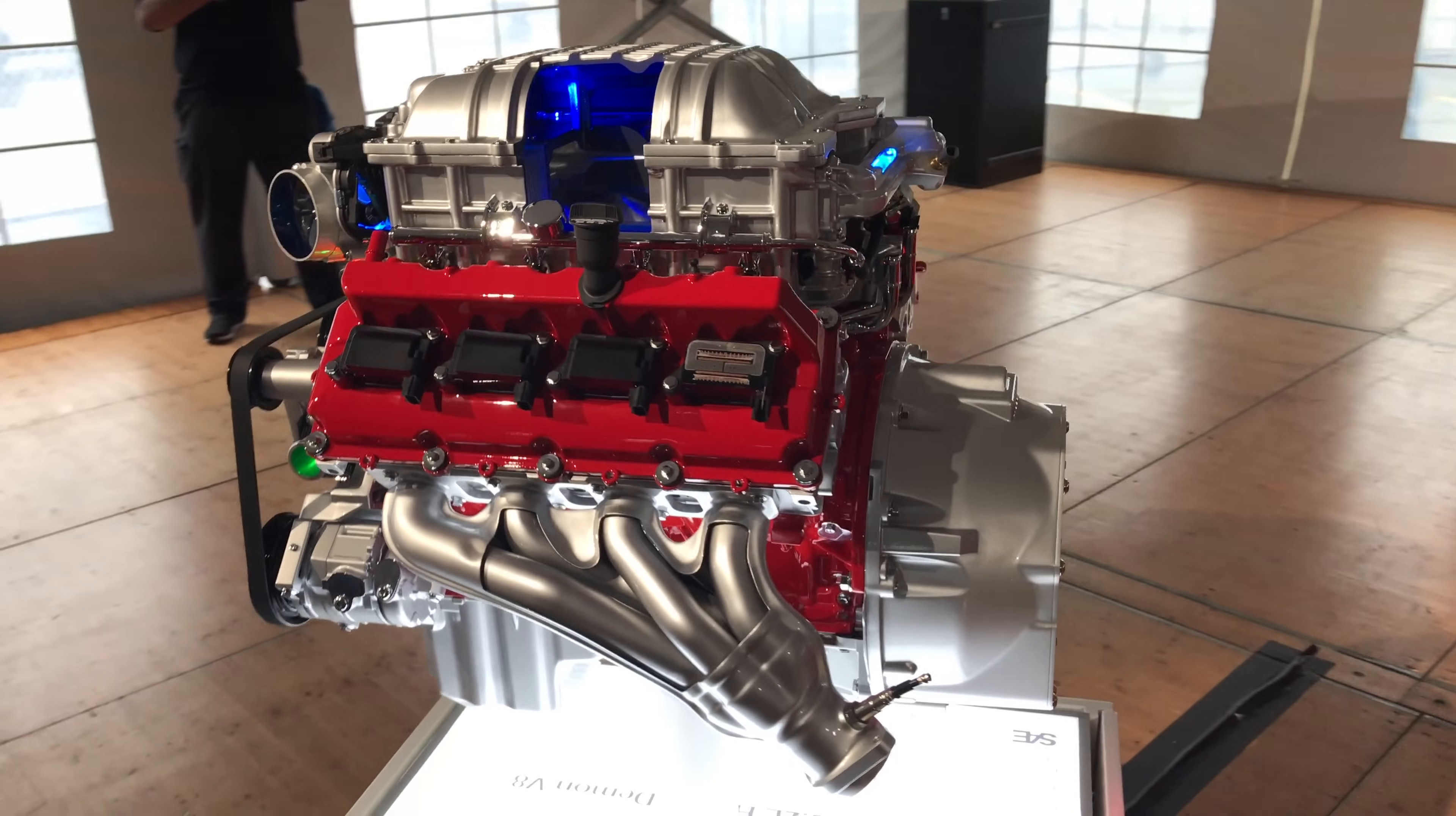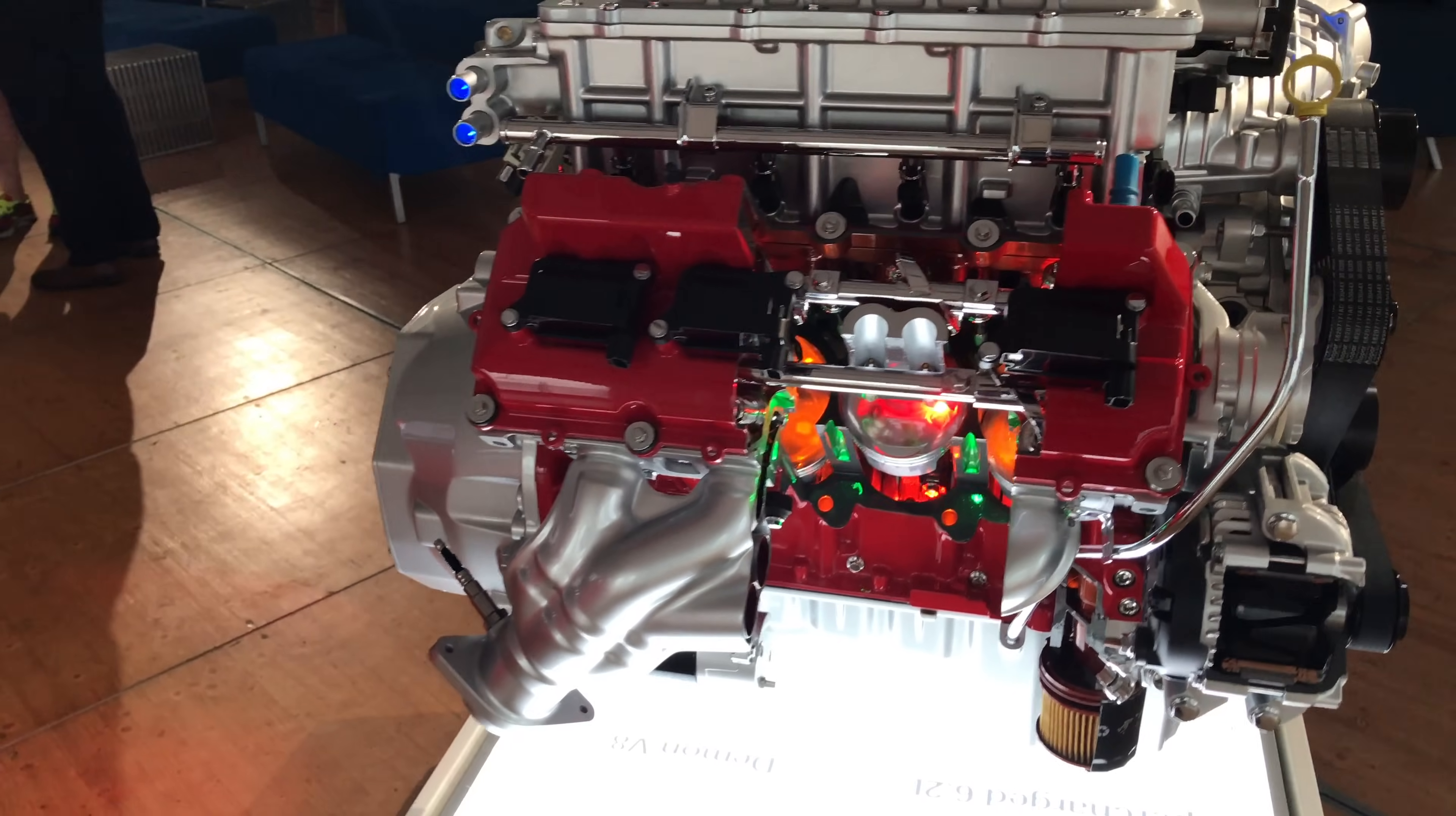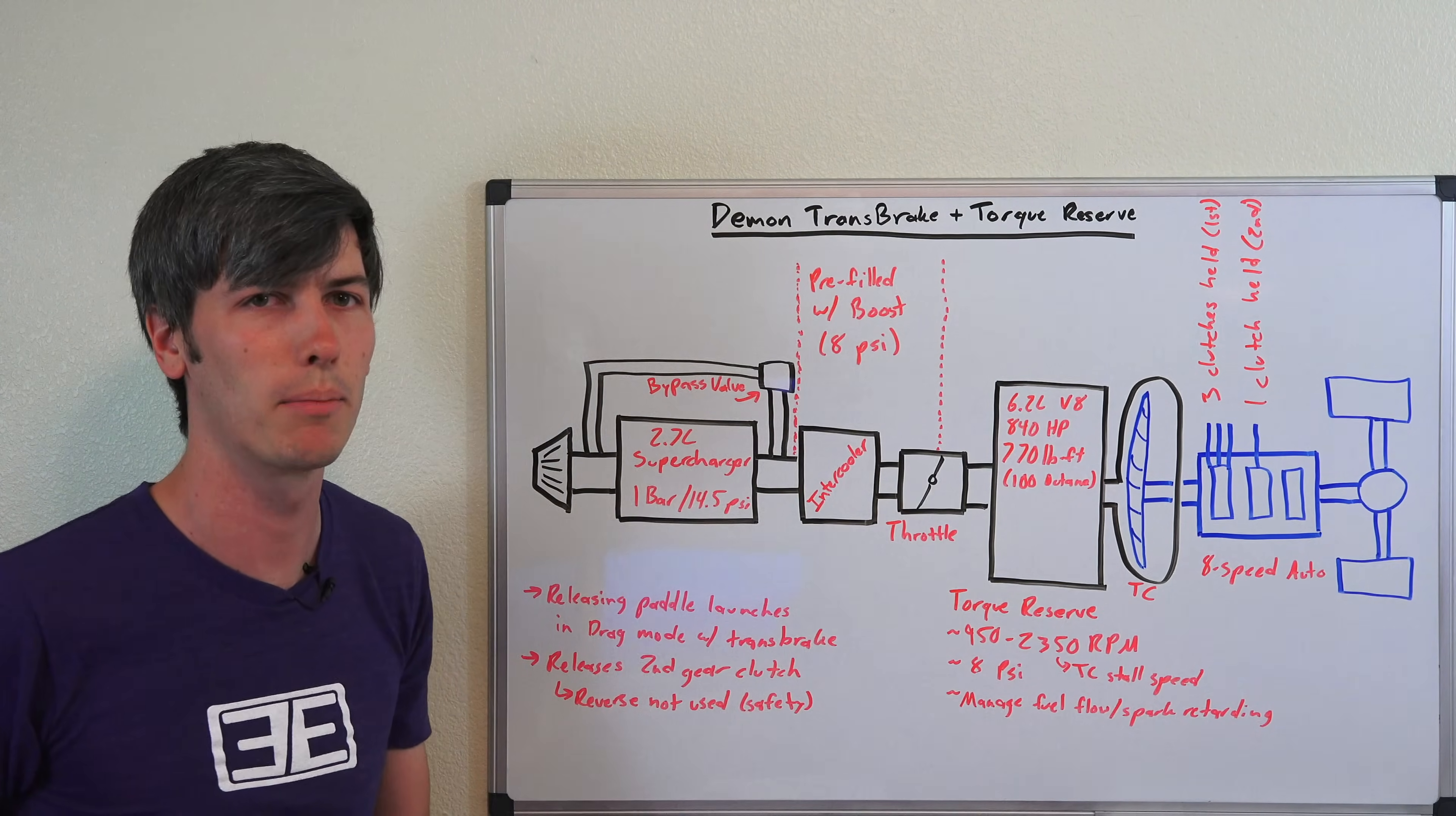So what does all of this add up to? Well, Dodge claims that with the trans brake and torque reserve active, you get up to 120% more engine torque than if you didn't have torque reserve. The trans brake also preloads the driveline with torque, which leads to full engine delivery of that torque from the engine to the wheels in just 150 milliseconds. So really fast, and that enables you to get a quicker zero to sixty time and also a quicker quarter mile time.